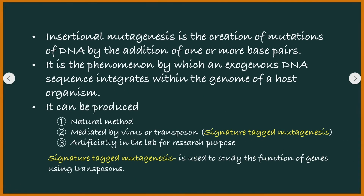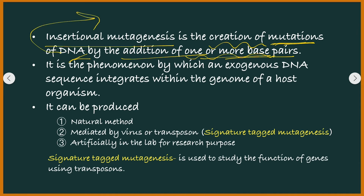Insertional mutagenesis is the creation of mutations in DNA by addition of one or more base pairs. DNA is made up of nucleotides and contains base pairs — adenine, guanine, cytosine, and thymine. So here there is addition of one or more base pairs in the DNA.